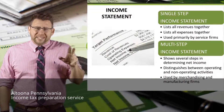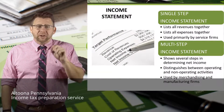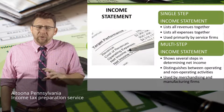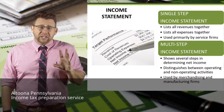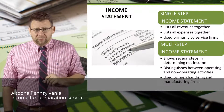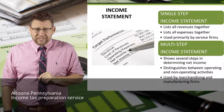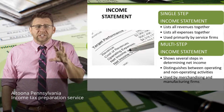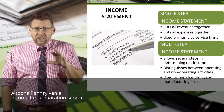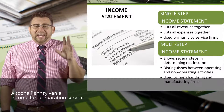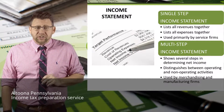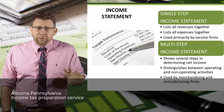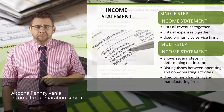A multi-step income statement still lists revenues and expenses, but it separates operating revenues and expenses from non-operating revenues and expenses, and divides the accounts into important subtotals that highlight areas of importance for investors and creditors. The subtotals include gross profit and operating income.